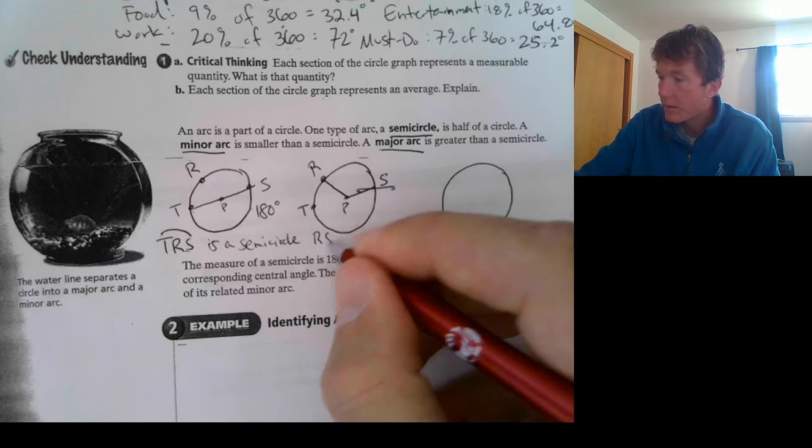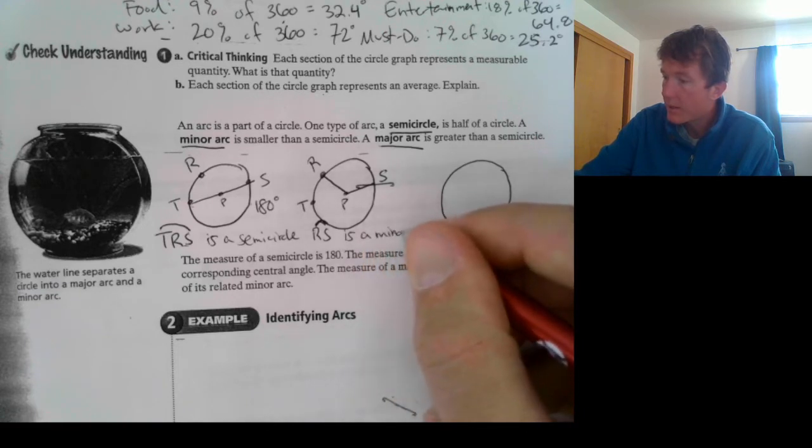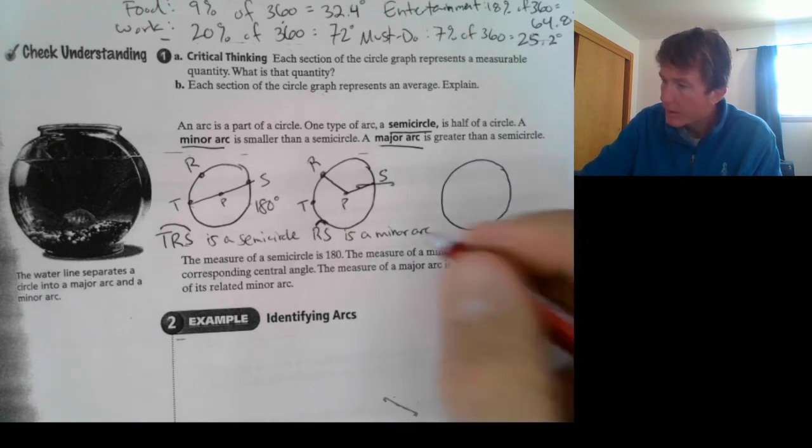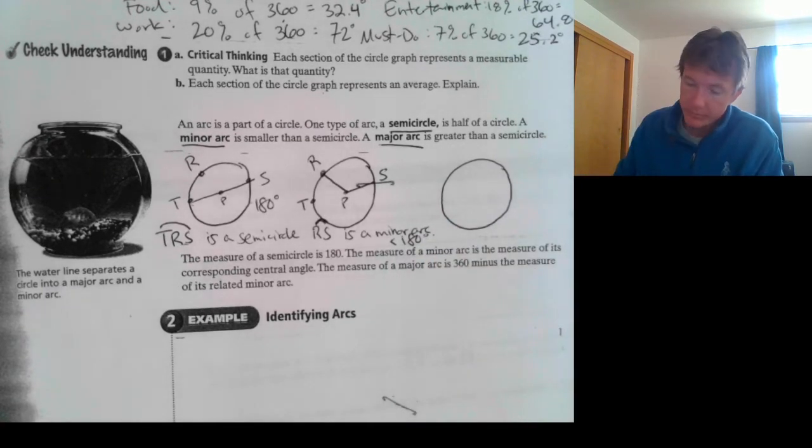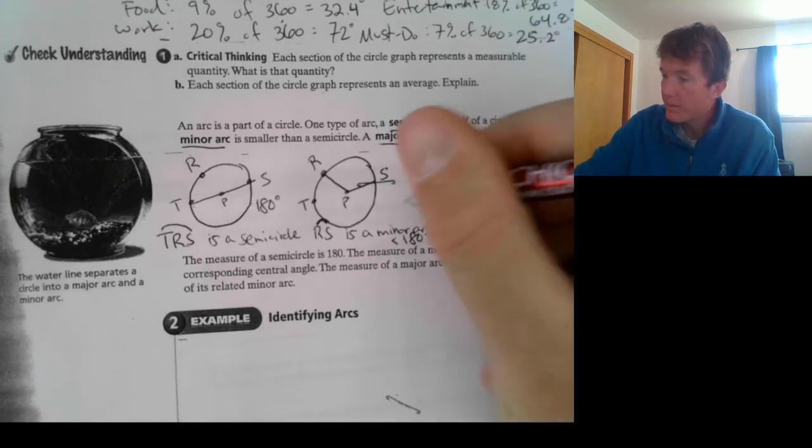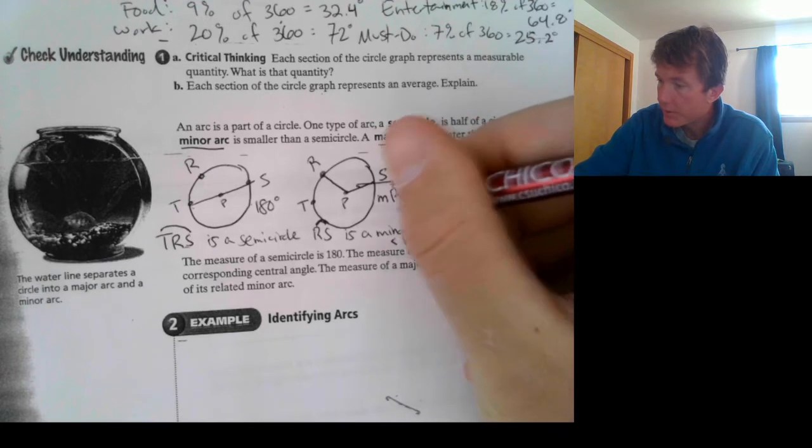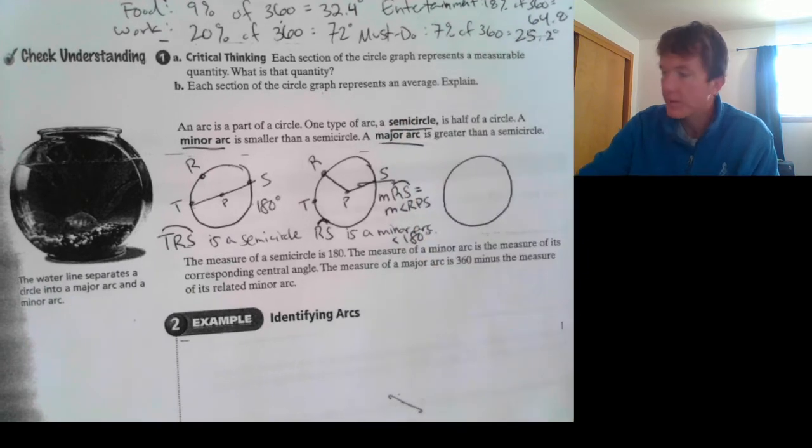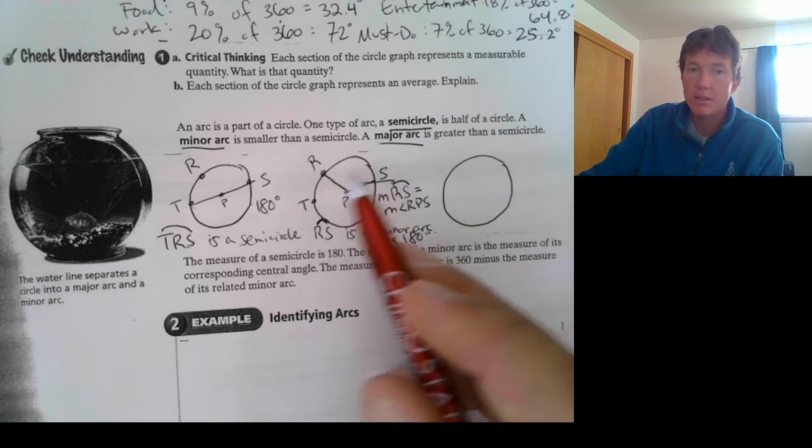So, I'll call this arc RS. And this is a minor arc. It's a minor arc, meaning it's less than a semicircle. So, this is less than 180 degrees. And then also, we can say that the measure of the arc RS is equal to the measure of the angle RPS, the central angle, RPS, RPS. So, this arc, the amount of degrees in it is equal to this angle here.